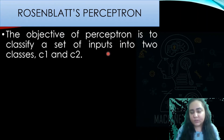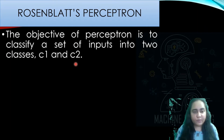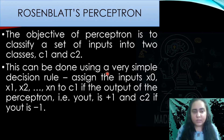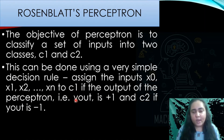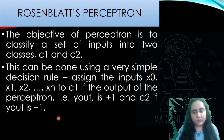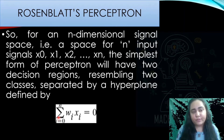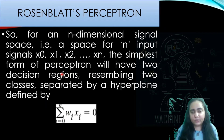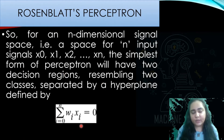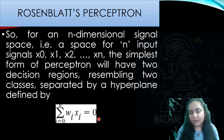The objective of the perceptron is to classify a set of inputs into two classes, C1 and C2. Classification is done using a simple decision rule: assign inputs to class 1 if the output of the perceptron is +1, and to class 2 if the output is -1. For an n-dimensional signal space with inputs x0, x1 up to xn, the simplest perceptron will have two decision regions separated by a hyperplane, which is defined by the weighted sum equation set equal to zero.